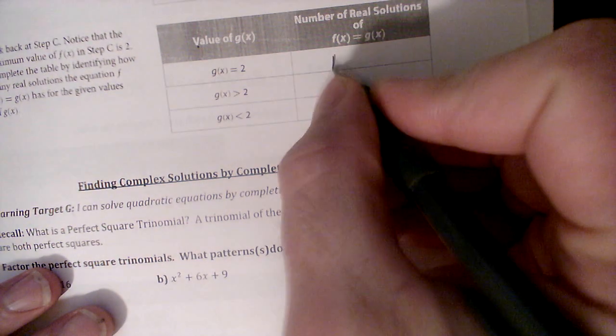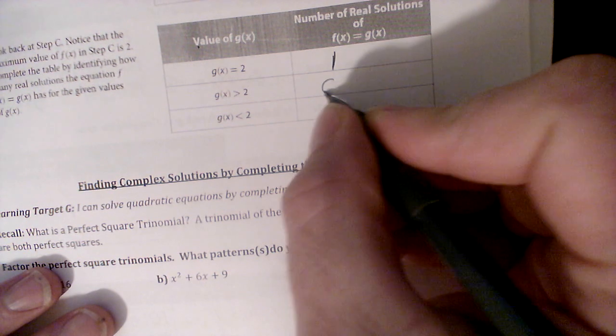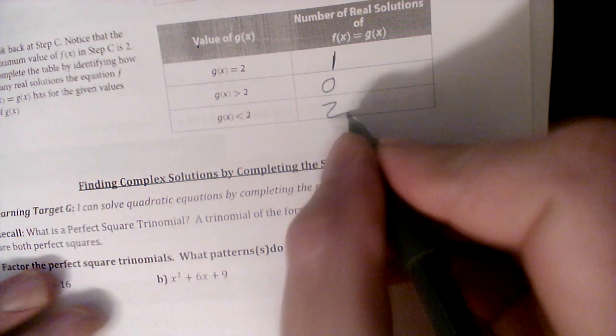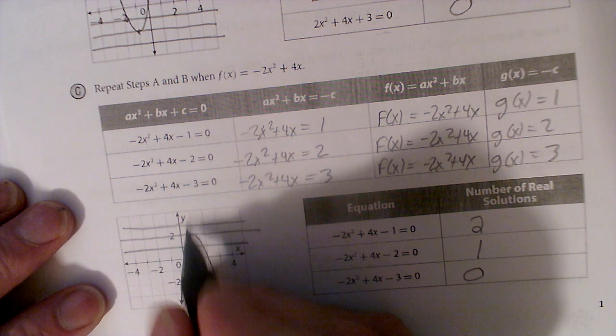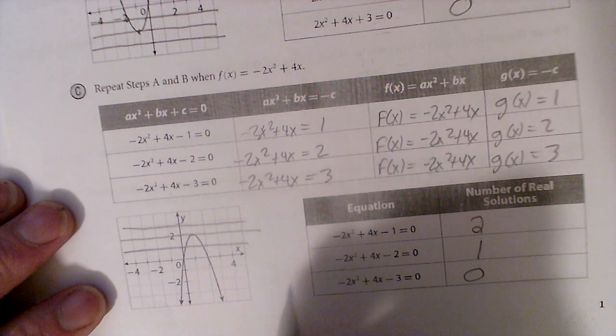So, same thing here, right? A little bit different. Anytime I'm equal to 2 is now going to be one solution. When I'm greater than 2, it's going to be 0. And less than 2, it's going to be 2. So we're talking about this one. Anytime I'm equal to 2, I have 1 right there on the vertex. When I'm greater, there's none. It doesn't touch up here. When I'm down here, it's going to have two solutions.